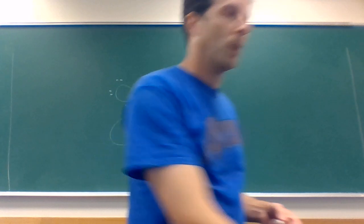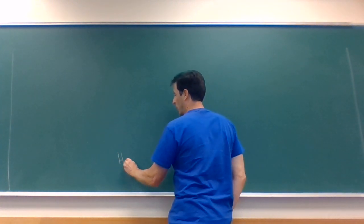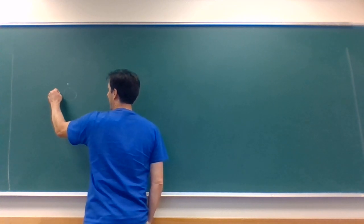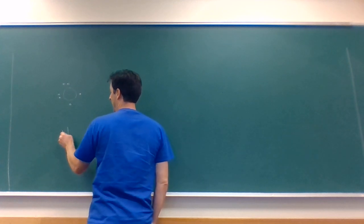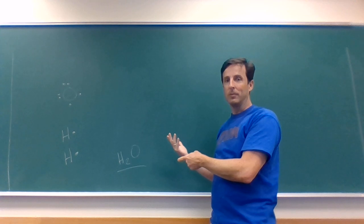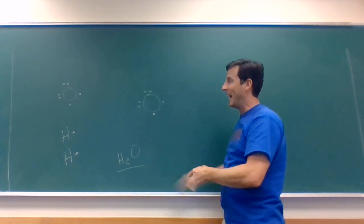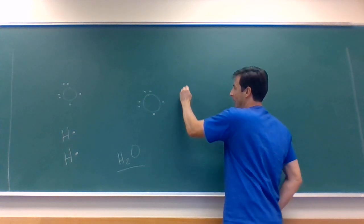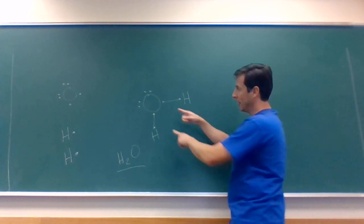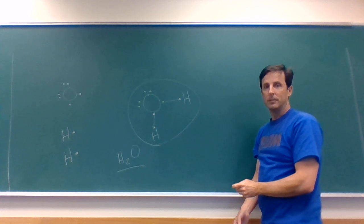Now let's do a water molecule, H₂O. Oxygen is going to have six dots, hydrogen is going to have one dot, and there are two of them. I put my six dots around oxygen, then place one hydrogen near each single dot. When I connect them, it's a single bond between oxygen and each hydrogen. That's my water molecule.